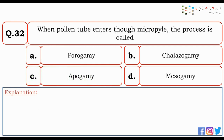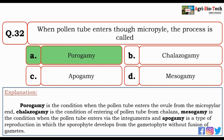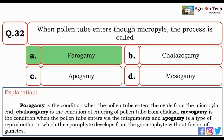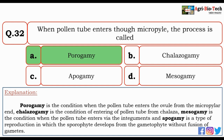Next question: when pollen tube enters through micropyle, the process is called — porogamy, chalazogamy, apogamy, or mesogamy? The correct answer is A — porogamy. Porogamy is the condition when the pollen tube enters the ovule from the micropyle end. Chalazogamy is when the pollen tube enters from the chalaza, mesogamy is when it enters via the integuments, and apogamy is reproduction in which the sporophyte develops from gametophyte without fusion of gametes.